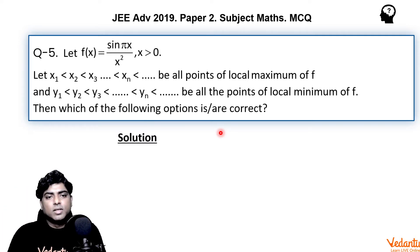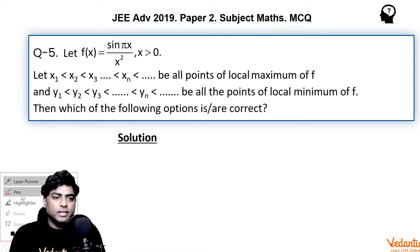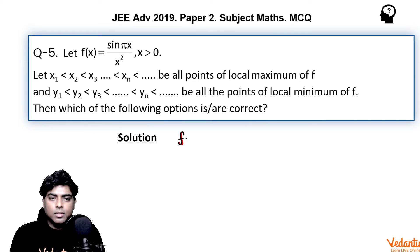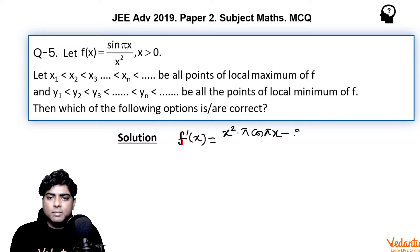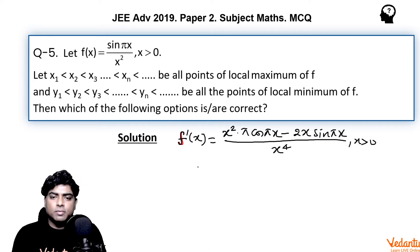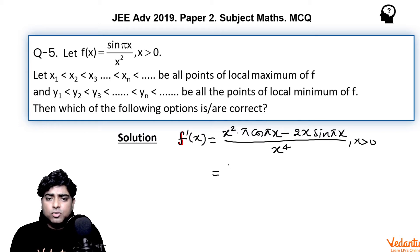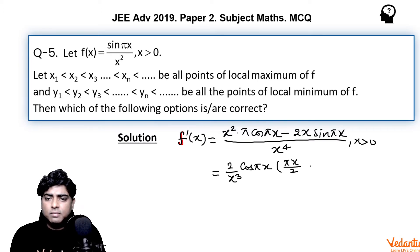So first we find f'(x). Using the quotient rule of differentiation, f'(x) equals [x² · π·cos(πx) − 2x·sin(πx)] / x⁴, with x > 0. Cancelling x from numerator and denominator and taking 2/x³ common, we can write this as (2/x³)[πx/2 − tan(πx)], multiplied by cos(πx).